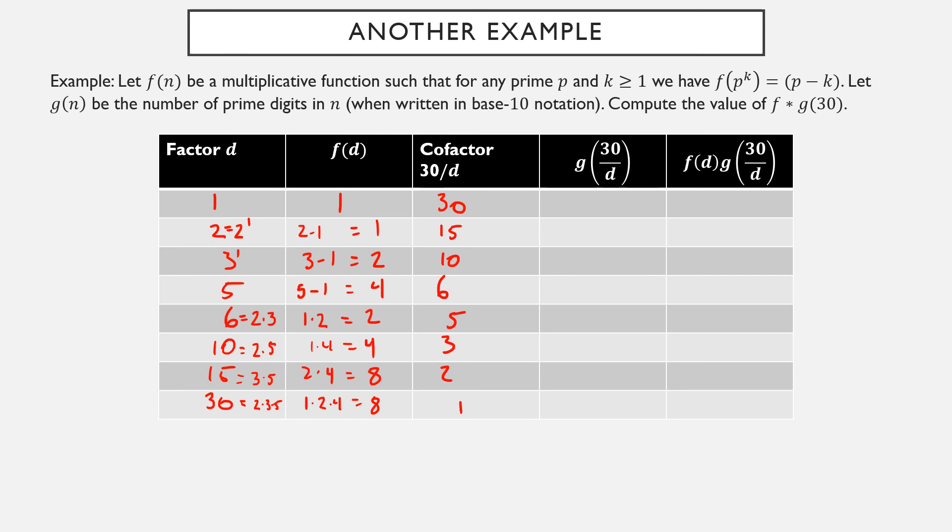Now let's take a look at the function g. All of our numbers are written in base 10 because that's just how we typically write them. So I look at the cofactor and I ask how many of the digits are prime. In 30, the two digits are 3 and 0. 3 is a prime number, so there was one prime digit. 5 is a prime number, but 1 is not. This has no prime digits. This has no prime digits. This has 1, this has 1, this has 1, and this has none. 6 is not a prime number. 5, 3, and 2 are, but 1 is not.